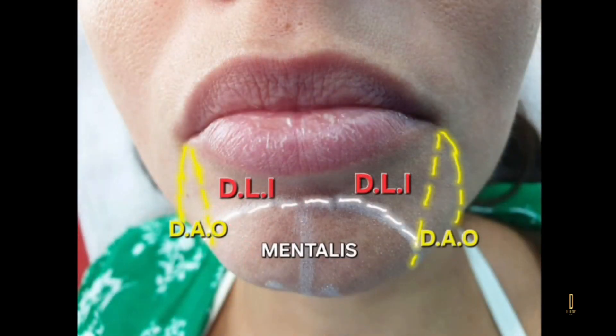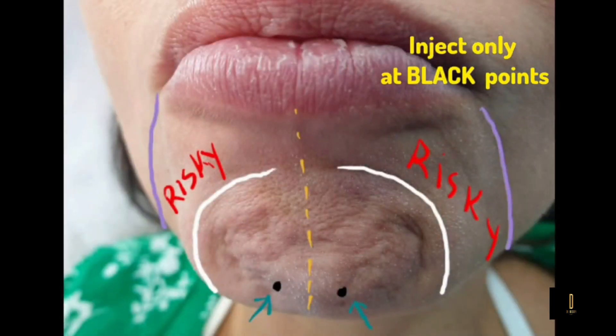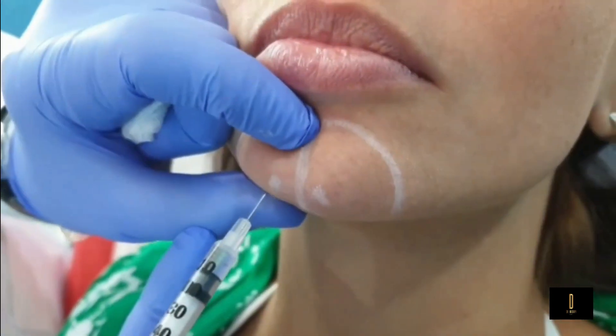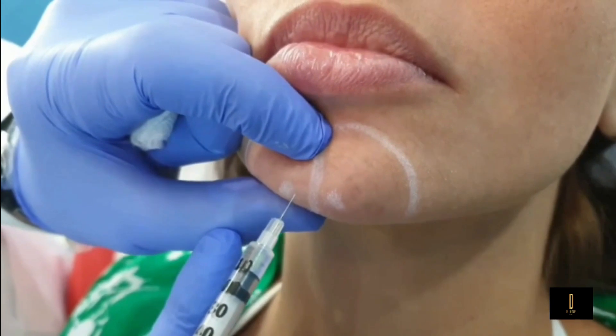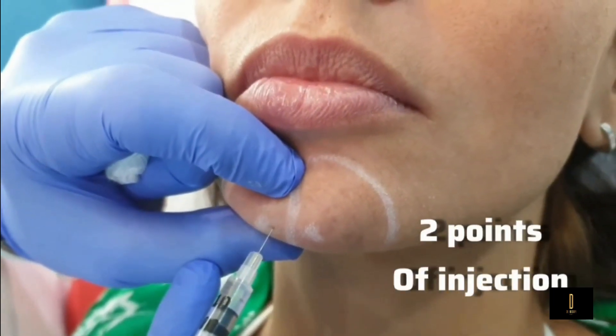Note that there are three major muscles in this area, so we need to be careful when we do injections. We only need to inject into the mentalis muscle. Now let us focus on the injection technique.